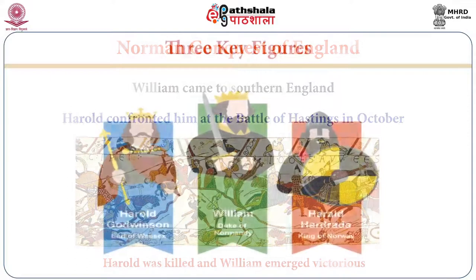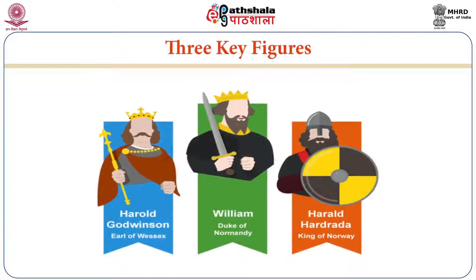Now, if you look at the screen, there are three key figures of the Norman Conquest. Number one, on the left-hand side, Harold Goldwinson, the Earl of Wessex. Then William, Duke of Normandy, in the middle. Then Harold Herodeta, King of Norway. These three men are instrumental — very vital — to the core of the Norman Conquest in England.